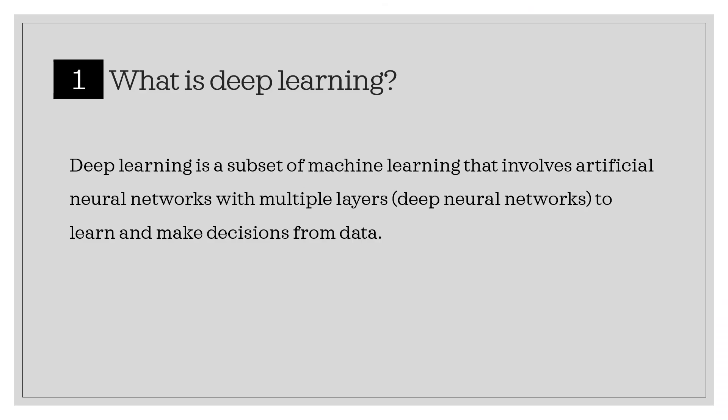What is deep learning? Deep learning is a subset of machine learning that involves artificial neural networks with multiple layers, enabling deep neural networks to learn and make decisions from data.